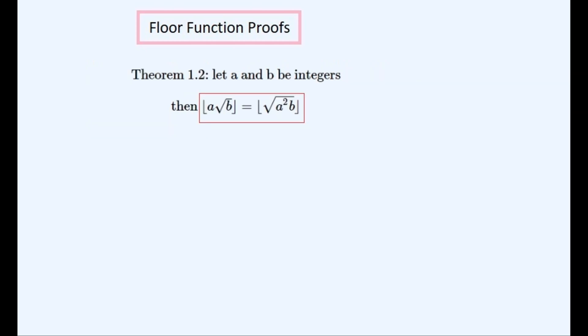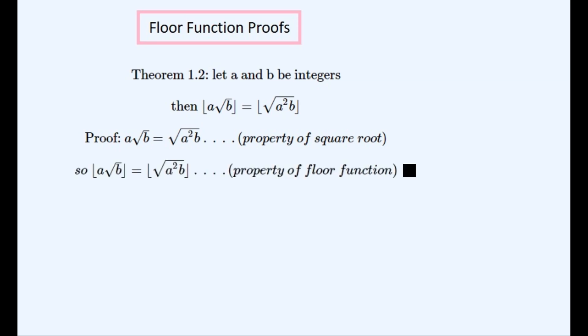And now to prove this very obvious looking theorem. It is obviously true because the numbers inside the floor function are exactly the same, but we can do better than this. In the first line of this proof we use this property of exactness to show that they are equal outside the floor function, and therefore they must be equal when inside it because their integer components are equal.